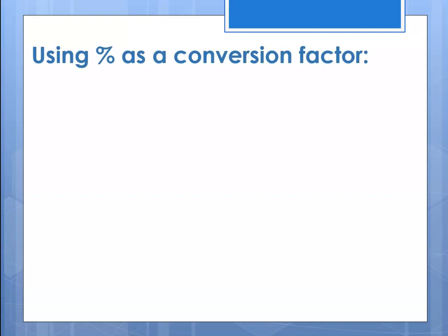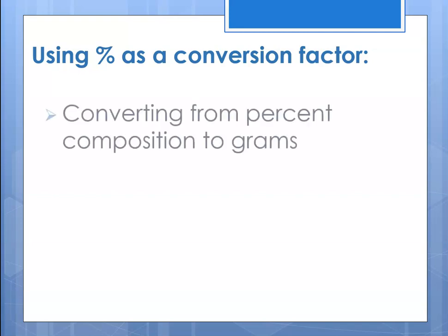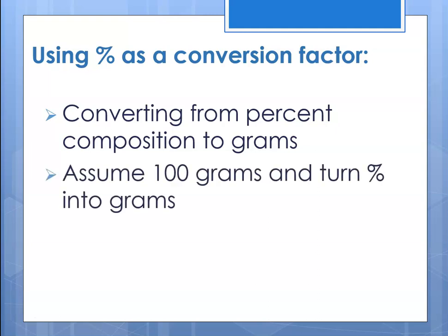We learn about percent composition because it is used as a conversion factor. In a lab setting, when you synthesize a compound, you send it out for elemental analysis to verify what you made. Percent composition is what you get back from elemental analysis, and it can be turned into a conversion factor. When converting from percent composition to grams, you always assume 100 grams, which allows you to turn the percent into grams, and from there you can calculate formulas.